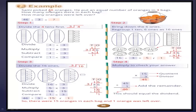Example: Sammy packed 46 oranges. He put an equal number of oranges in 3 bags. How many oranges will be in each bag? 46 divided by 3: 4 divided by 3 equals 1; 1 multiplied by 3 equals 3; subtract: 4 minus 3 equals 1. Bring down the 6: 16 divided by 3 equals 5; 5 multiplied by 3 equals 15; subtract — remainder equals 1. So there were 15 oranges in each bag, and 1 orange was left over.